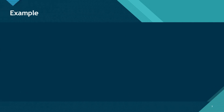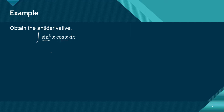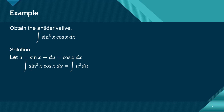Let us begin with something simple. Let us get the antiderivative of the cube of sine of x times cosine of x dx. We know that the derivative of sine is cosine, so the technique of substitution is the right choice. Let u equal sine of x, so du equals cosine of x dx. This becomes the cube of u times du. We apply the power rule and our antiderivative is one-fourth times sine of x raised to the fourth plus C.